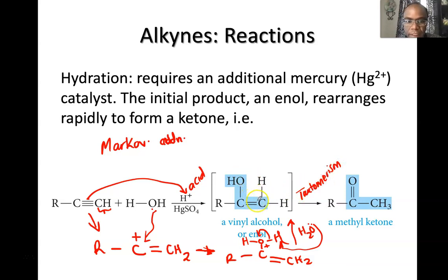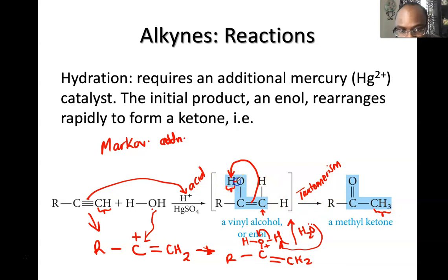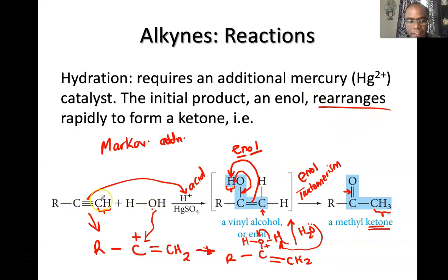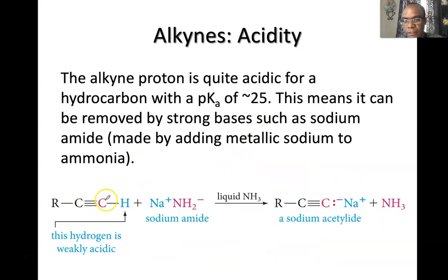Tautomerism is like a resonance rearrangement: the pi bond is used to remove the hydrogen from the OH, giving CH3 on one side, the C–H bond is used to make a new pi bond with the carbon, and you get a ketone. This is called enol tautomerism — the enol has an OH group and a C=C double bond, and it rearranges to the keto form. So hydration of an alkyne via Markovnikov addition ultimately gives a ketone.